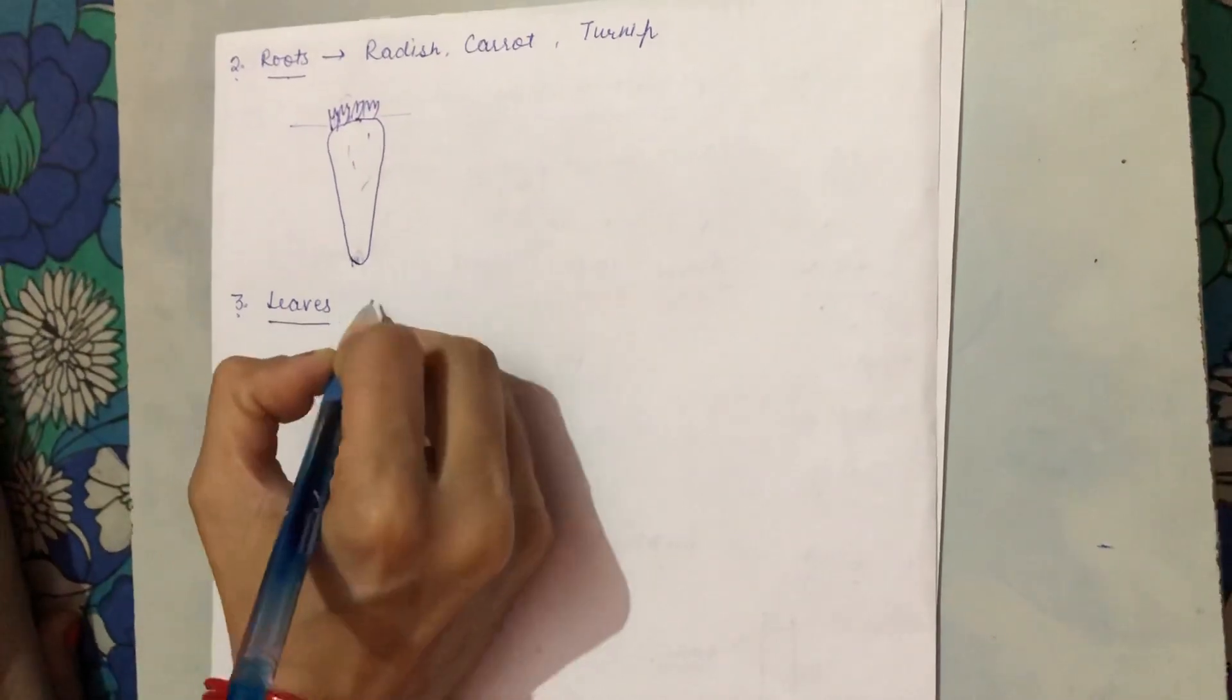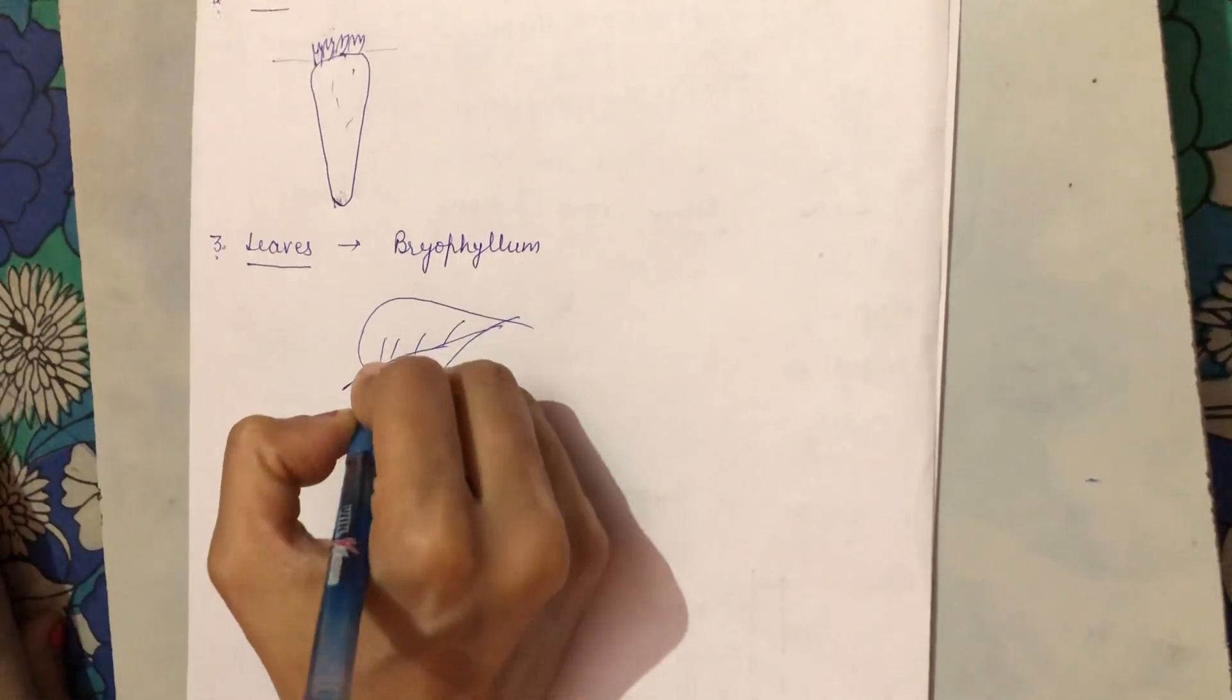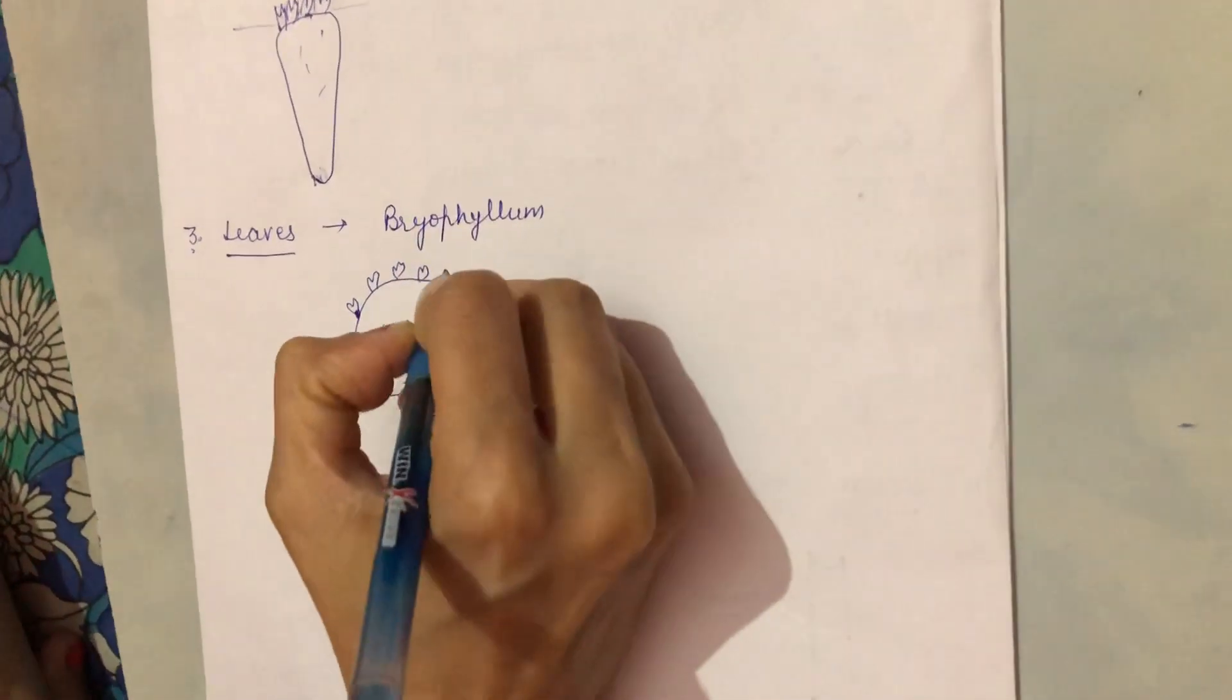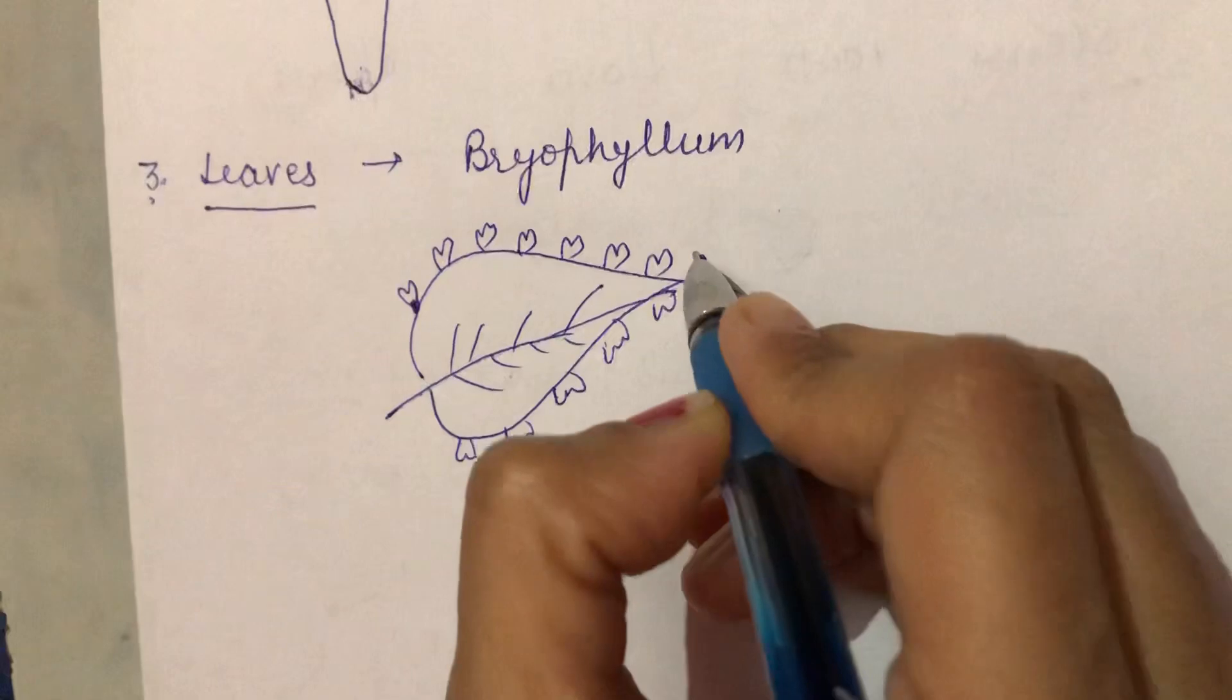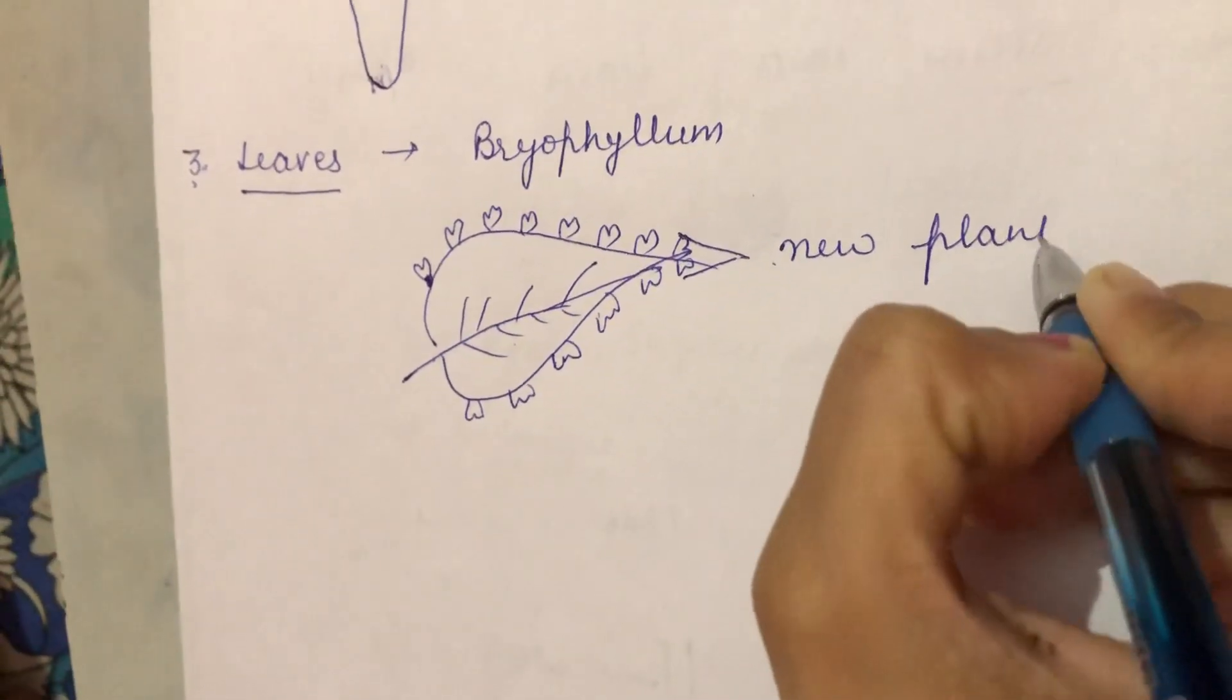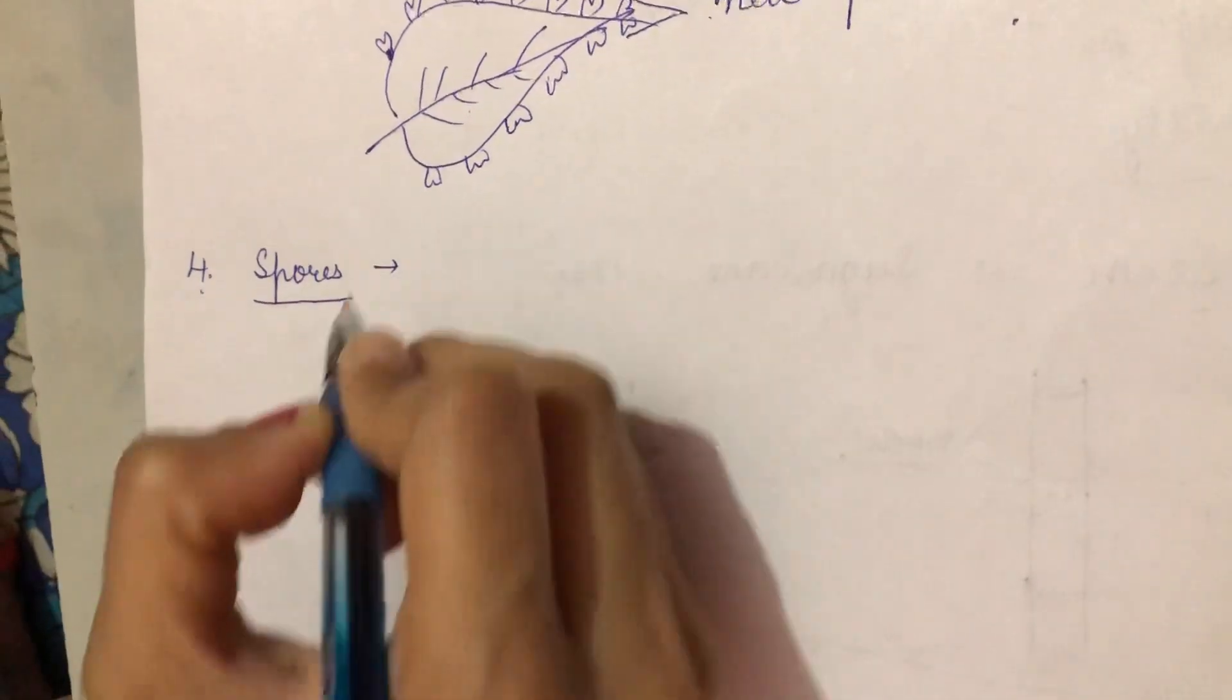And now we will discuss how leaves are used to grow a new plant. There is a plant bryophyllum and the leaf of the bryophyllum has some tiny leaves or buds on its margins. When these fall off in the soil and get favorable conditions, they grow into new plants.